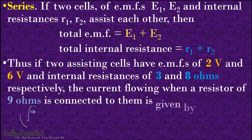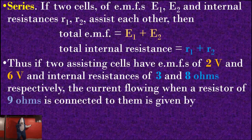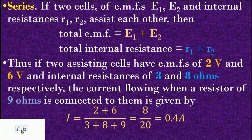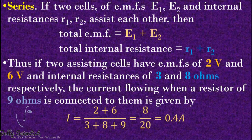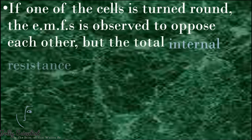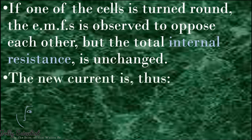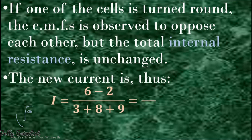The current flow when a resistor of 9Ω is connected to them is given by I equals 8 divided by 20, which equals 0.4 amps. If one of the cells is turned around, the EMFs oppose each other, but the total internal resistance is unchanged. The new current is thus 4 divided by 20, which gives 0.2 amps.